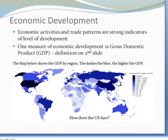Economic development: economic activities and trade patterns are strong indicators of the level of economic development. One measure of economic development is gross domestic product, GDP. This map shows the gross domestic product by region — the darker the blue, the higher the GDP. The United States is one of the darker blue countries, which is positive.